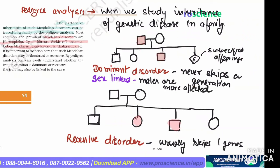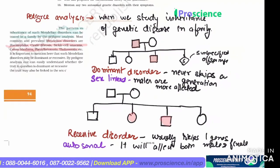In autosomal disorders, it will affect both male and female equally, approximately equally. It will affect both male and female. Males and females have equal chances.